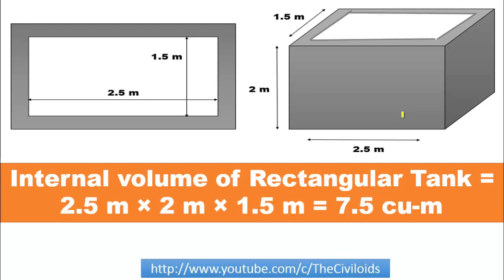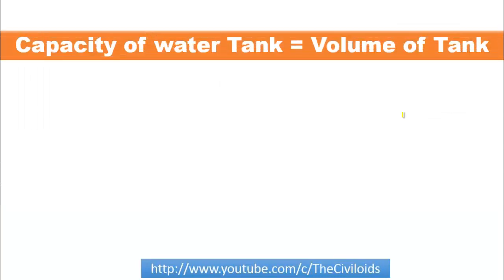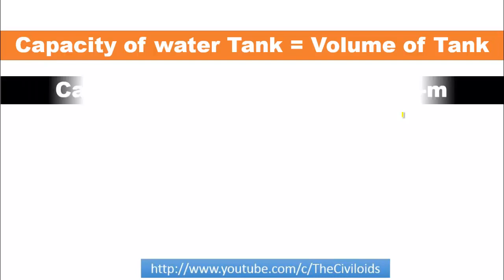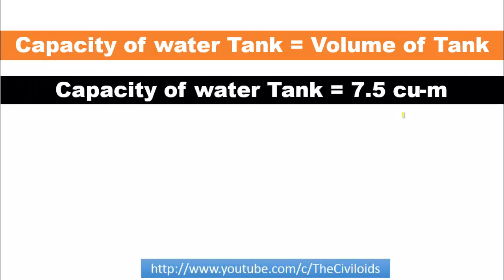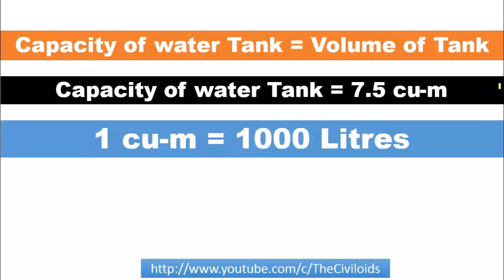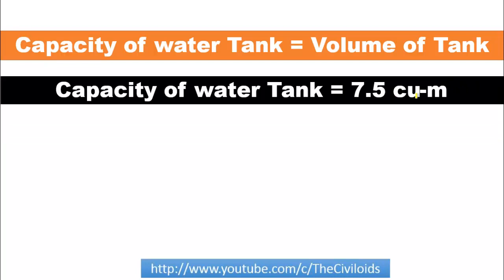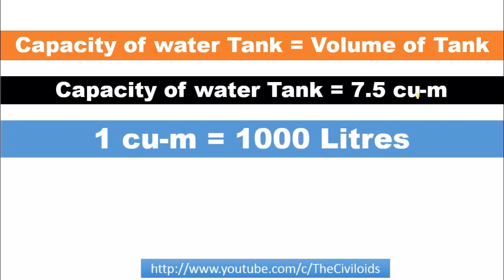The water carrying capacity of a water tank is equal to its volume. So capacity of water tank will be equal to 7.5 cubic meters. Now to change this cubic meter into liters, we know that 1 cubic meter is equal to 1000 liters.